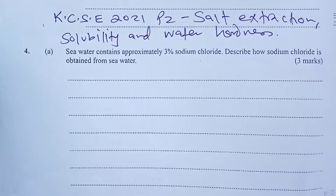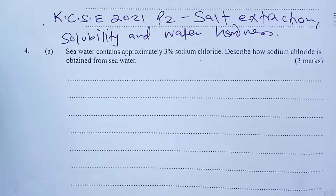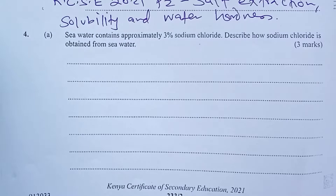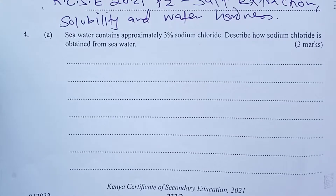Greetings from us. We present to you today question number four from Chemistry Paper 2, KCSE 2021. The question tested on salt extraction from seawater, solubility of ammonia gas in water, and water hardness. Welcome and be with us till the end as we show you how a student would have answered this question correctly to score the full marks.